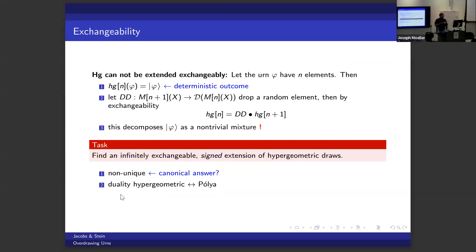So we need to generalize. Hypergeometric cannot be extended exchangeably — here's why. If I start with an urn with n elements and draw n times hypergeometrically, I know exactly what I get: that very urn, because I've emptied it. So hypergeometric-n of that urn is a Dirac delta. But if I'm exchangeable and have n draws, I can do n+1 draws and just drop a random element to get back to n draws. That would mean decomposing a deterministic measure into a non-trivial mixture, and that can't work in ordinary probability.